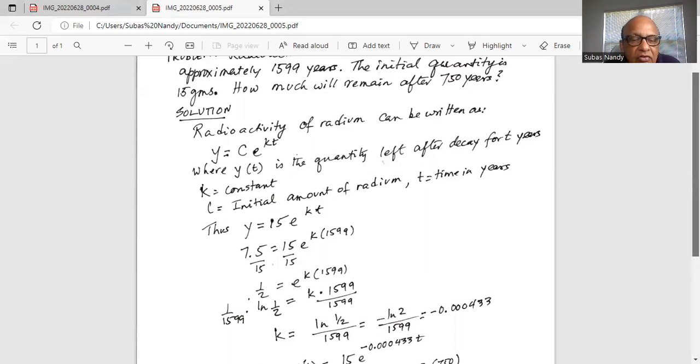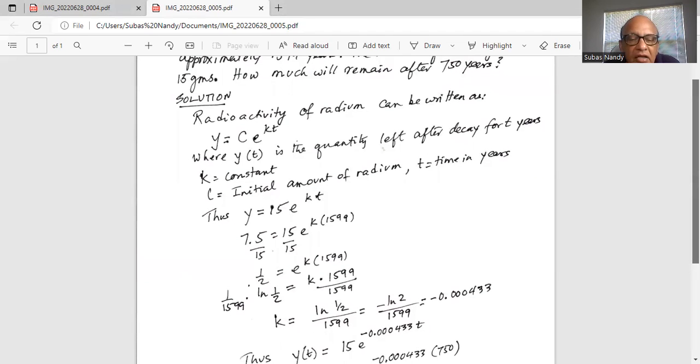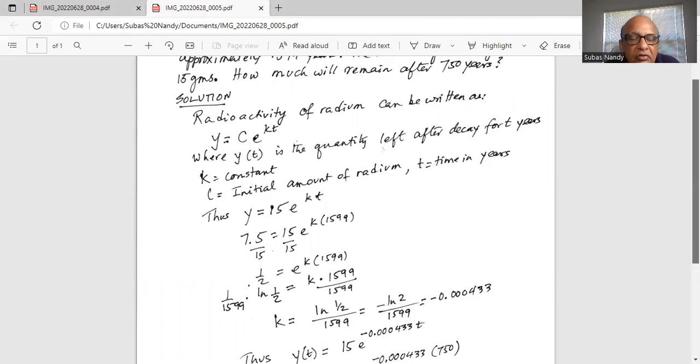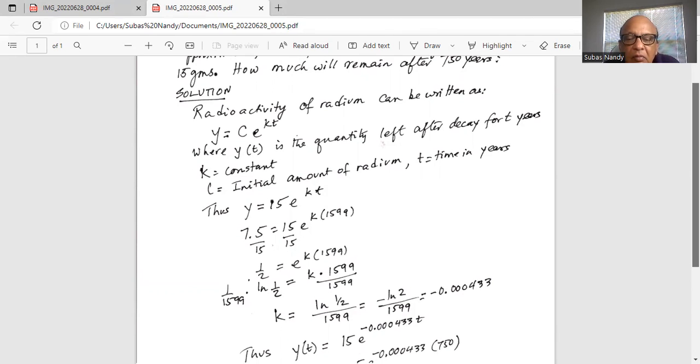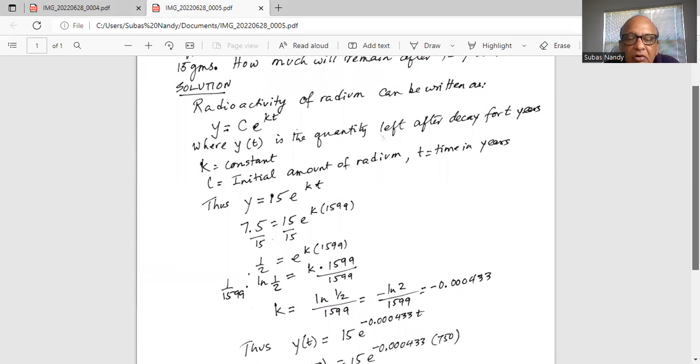And we get k = ln(1/2)/1599. And ln(1/2) = -ln(2). Why? Because it is ln(1) - ln(2), ln(1) is 0. Thus, for ln(1/2), we are left with -ln(2)/1599. Hence k = -0.00433.